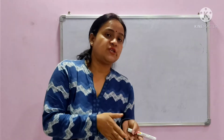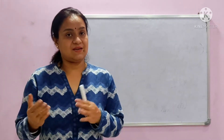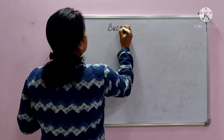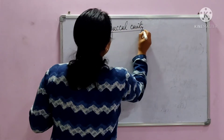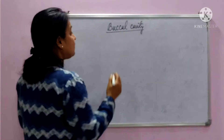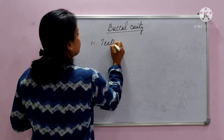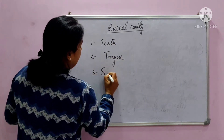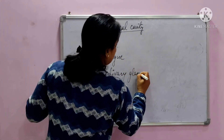The gut or alimentary canal starts from the mouth. The mouth, or buccal cavity, is an organ which contains many different organs — it is not a single organ but a cavity where different organs are present. The organs present in the buccal cavity are the teeth, tongue, and the salivary glands, and each one has a very significant role in digestion.